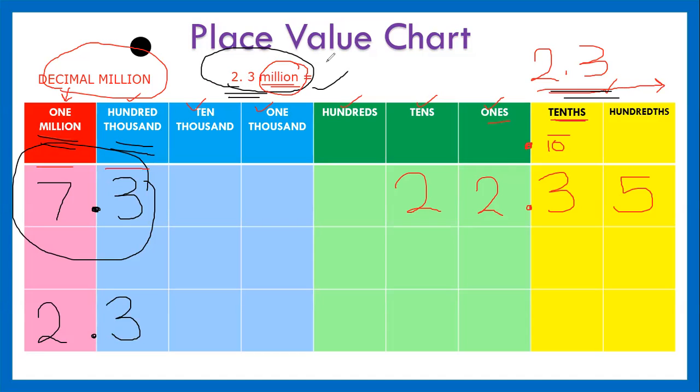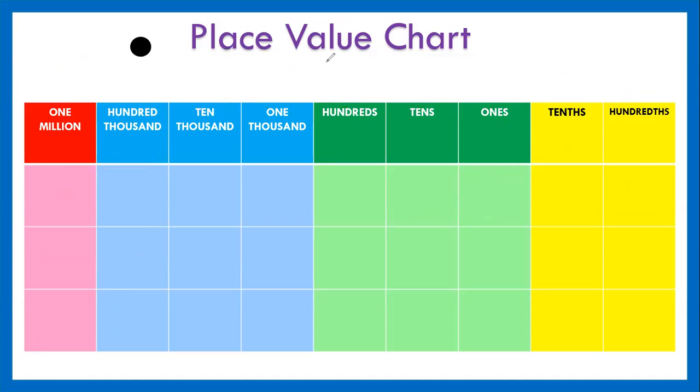With this understanding, clearing all the drawings, let's look at how we can convert a decimal number to a whole number and vice versa. Let's start with the whole number first. Let's say I have 1,500,000, and I'm going to write it in the place value chart. This is my whole number. I have a house for sale for 1,500,000.